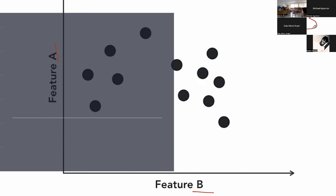K equals 3 means we want to create three clusters or three partitions. The first thing the algorithm does is choose K random points within the feature space as the initial centers of the clusters. Think of each center as a center of gravity — something that draws everything around it closer to it. This is called the centroid. These initial centers are randomly placed and do not have to coincide with any existing data points.